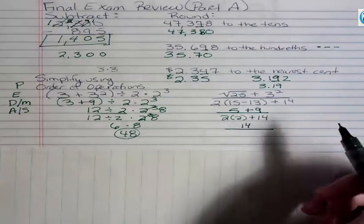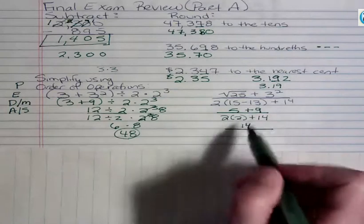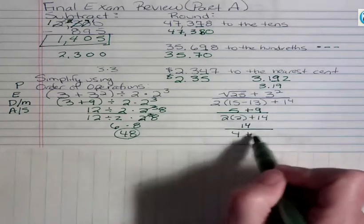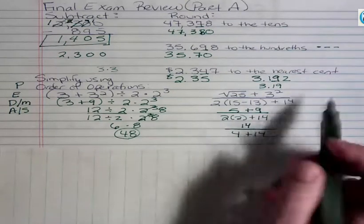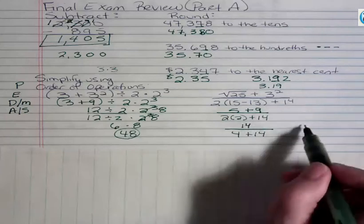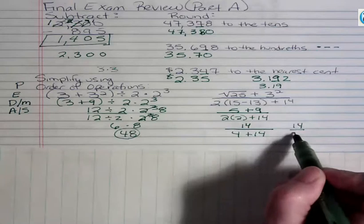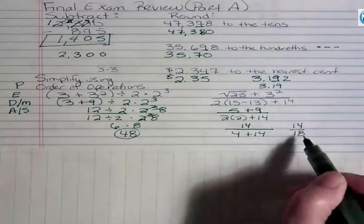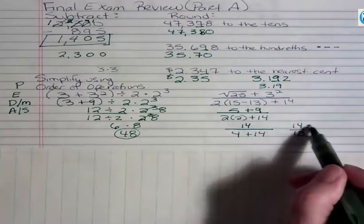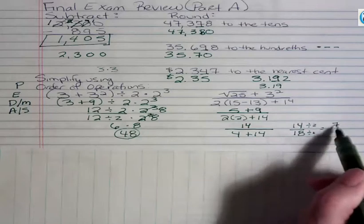And down here, I have 2 plus 2, which is 4, plus 14. I think that was supposed to be something else. But whatever. I made a mistake when I wrote the problem. So I have 14 on top, and I have 4 plus 14, or 18 on the bottom. And I'd always want to reduce that to lowest terms. If I divide both the top and the bottom by 2, I get 7 over 9.